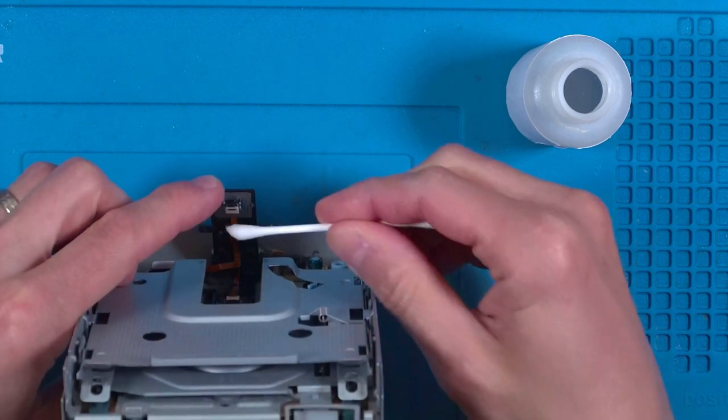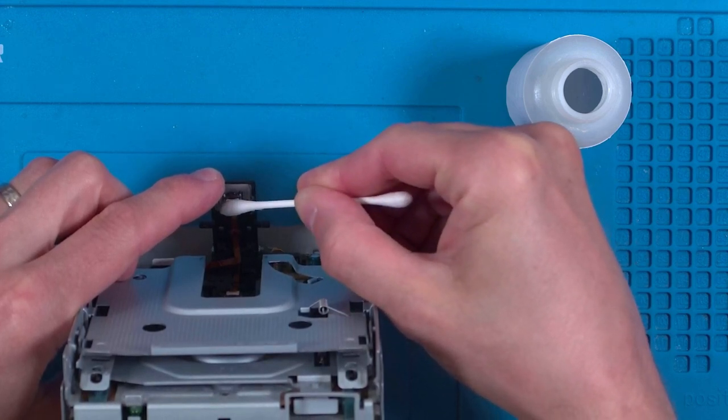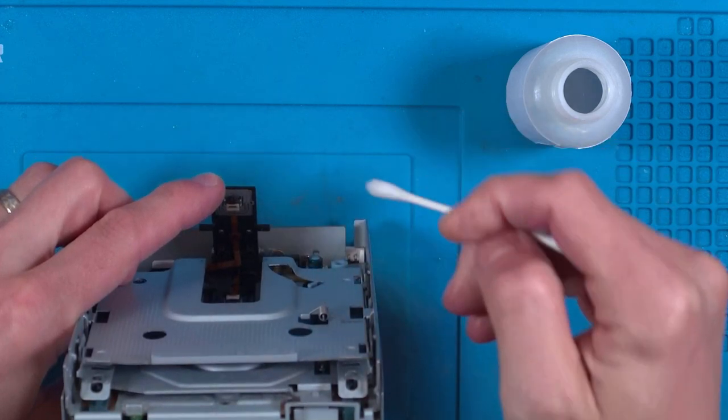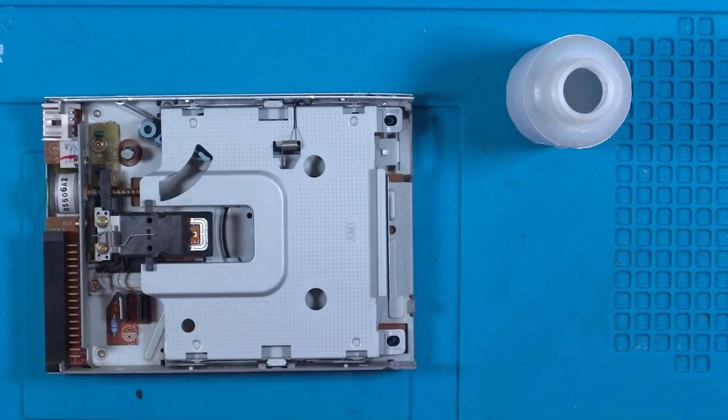You may notice if it's very dirty that it gets progressively better. If you repeat this several times and you still can't read discs, then there's two possibilities. One is that the disc you're testing might actually be making the heads dirty again. The other possibility is that the heads might be misaligned.